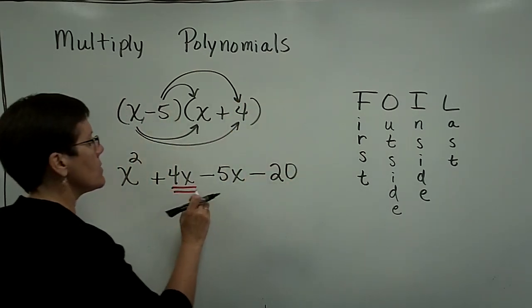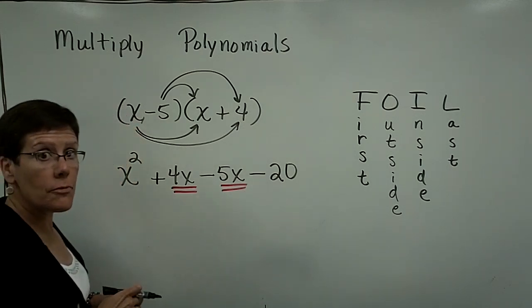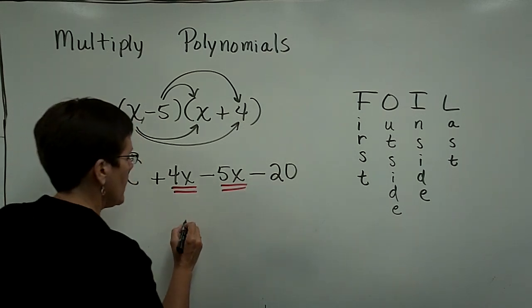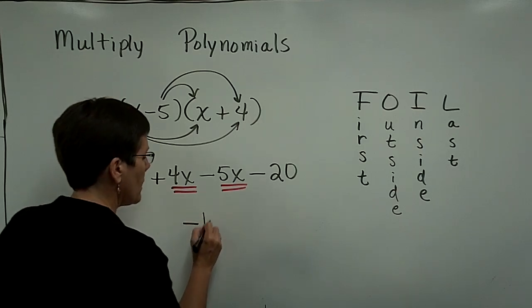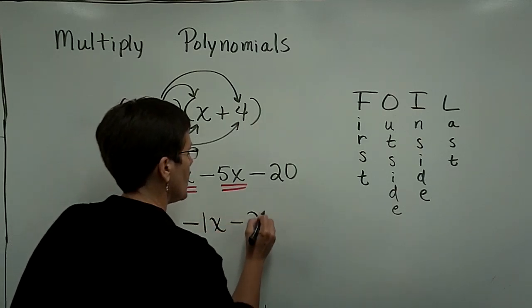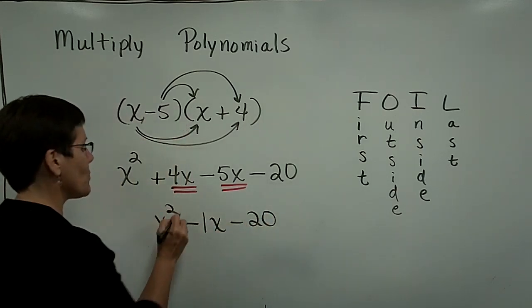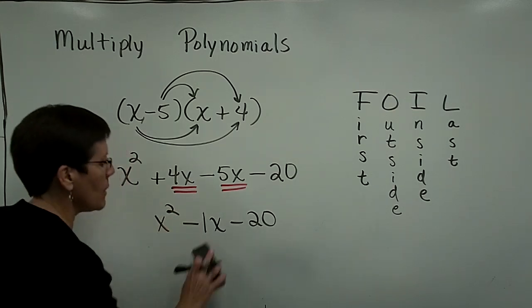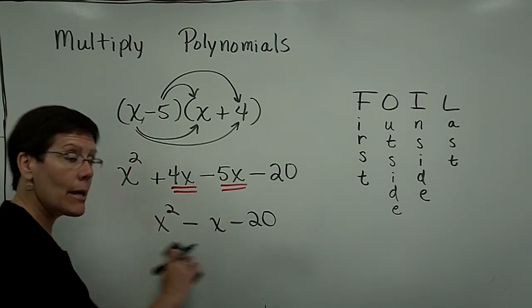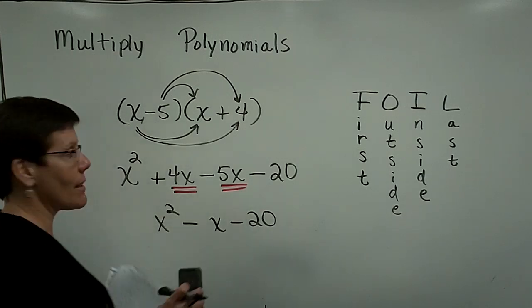Negative 5 times a positive 4 is a minus 20. And then these two are like terms. A positive 4 minus 5 is a negative 1x. You do not need to write that minus 1. We typically will write that as a minus x. I'm done. Don't try to be collecting anything here.